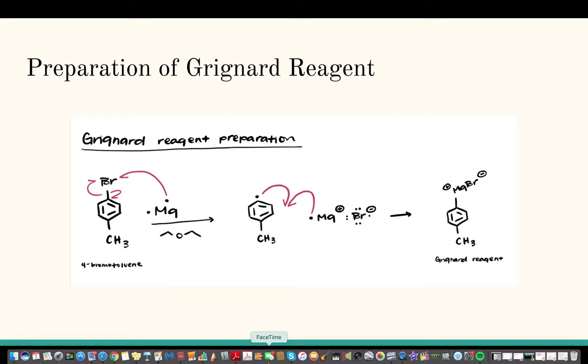And then that will leave us with one electron on the carbon in the aromatic ring. And that one electron will bond covalently with the last electron on the magnesium.